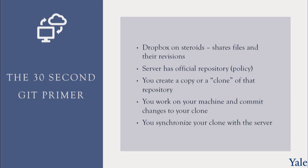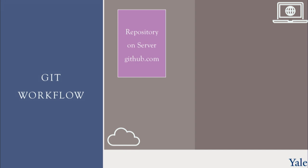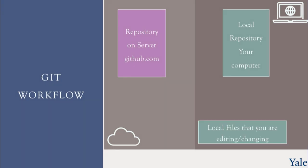Let's look at the same thing in flowchart format — this is your workflow. On the left we have the cloud, with a lighter color background, and on the right we have your computer, with a slightly darker background. We have a repository on a server, perhaps github.com, a local repository on your computer as a copy, and your local files — those are the ones you're editing, changing, and working on.